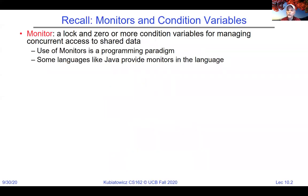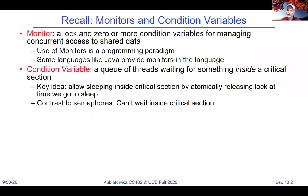If you remember from last time, we did a lot of talking about the monitor paradigm for synchronizing. A monitor is basically a lock and zero or more condition variables for managing concurrent access to shared data. Some languages like Java provide monitors natively. For languages that don't have it natively, you can get a condition variable class that integrates with a lock class and program with the monitor idea.